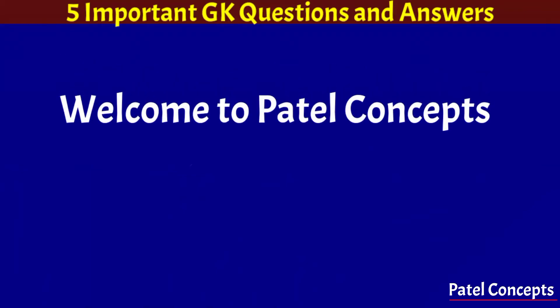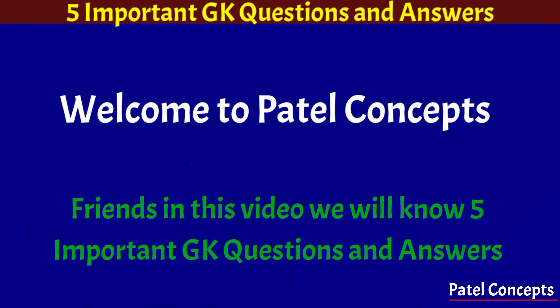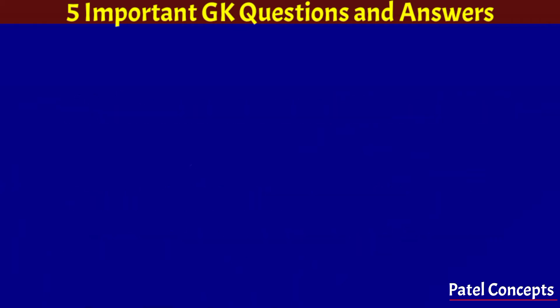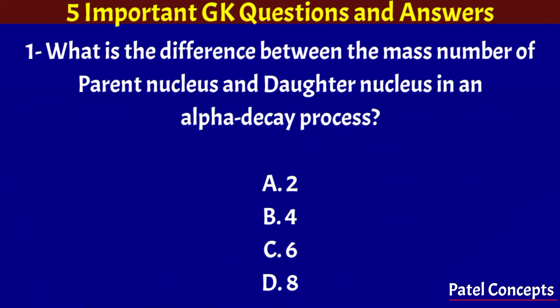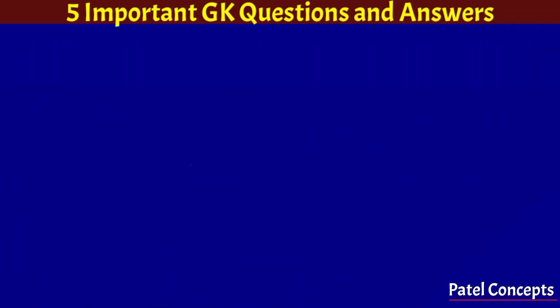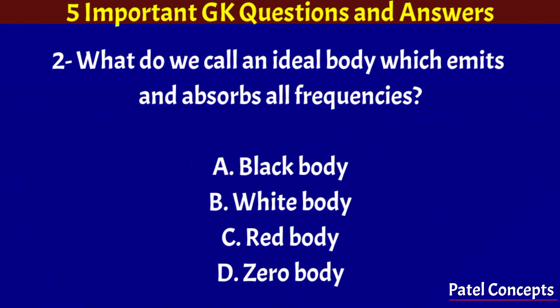Welcome to Patil Concepts. In this video we will have five important GK questions and answers. What is the difference between the mass number of parent nucleus and daughter nucleus in an alpha decay process? For what do we call an ideal body which emits and absorbs all frequencies? Black body.